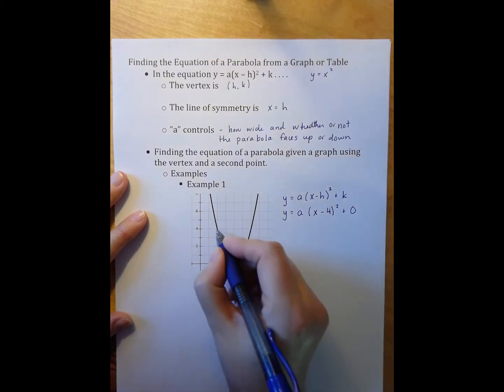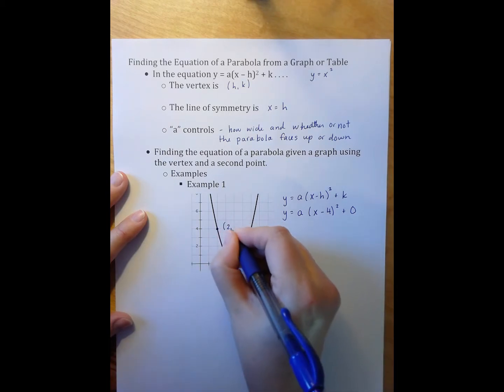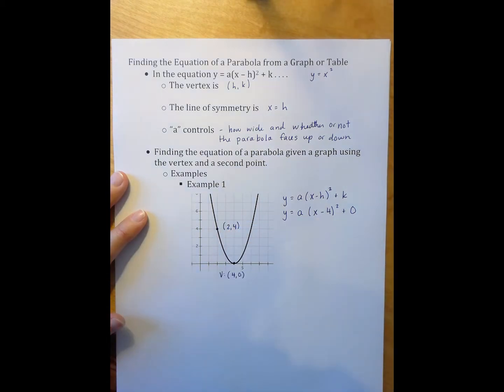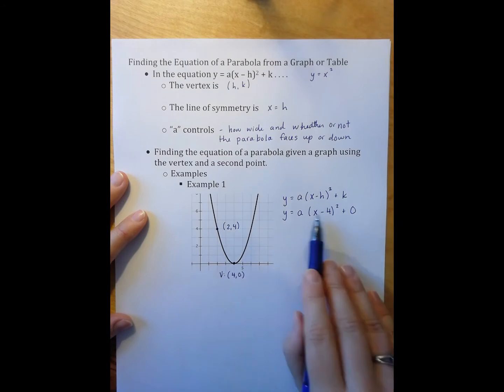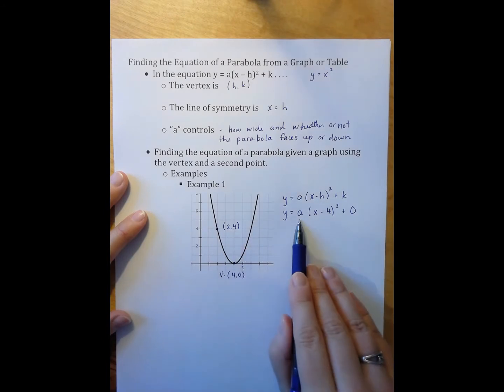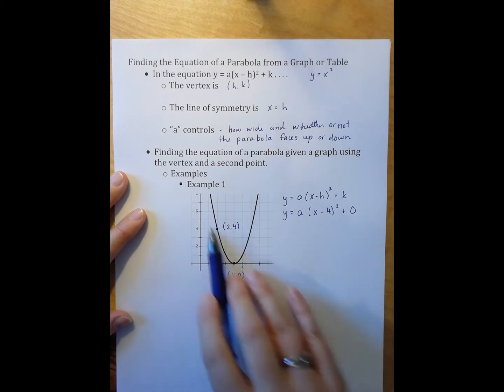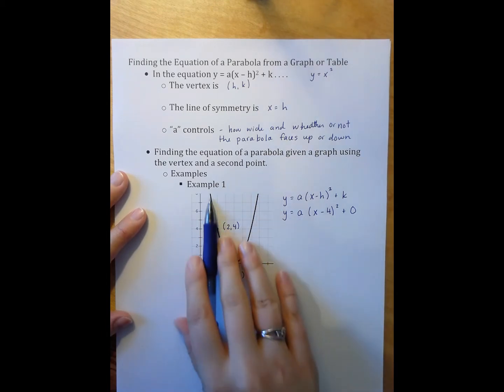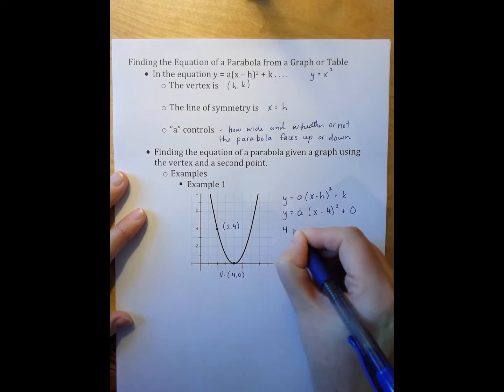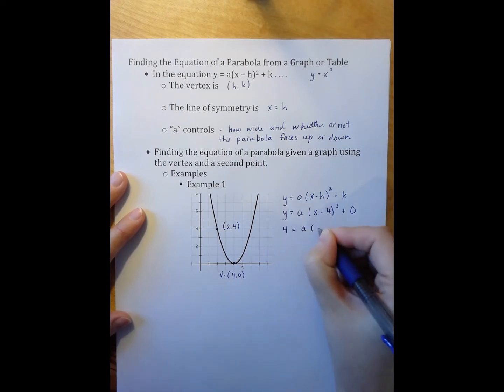So I look at this graph, and I can see that the parabola goes through the point 2, 4, which means if I plug 2 in for x and 4 in for y, I can solve for a. And that will get me the a value that is appropriate for this particular parabola. So I have 4 equals a times the quantity 2 minus 4 squared, and I'm going to take off the plus 0 because that isn't necessary at this point.